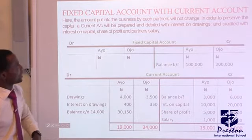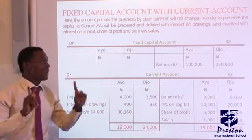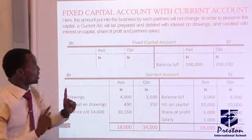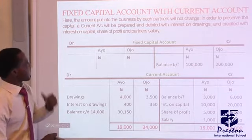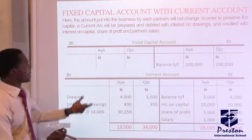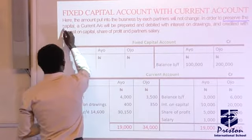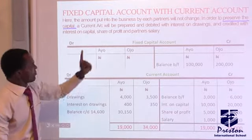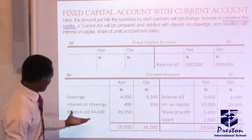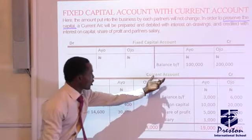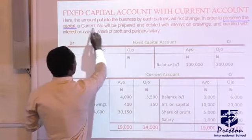Under the fixed capital account, which is used with a current account, the amount put into the business by each partner will not change. In order to preserve the capital, a current account will be prepared. The current account is debited with interest on drawings.